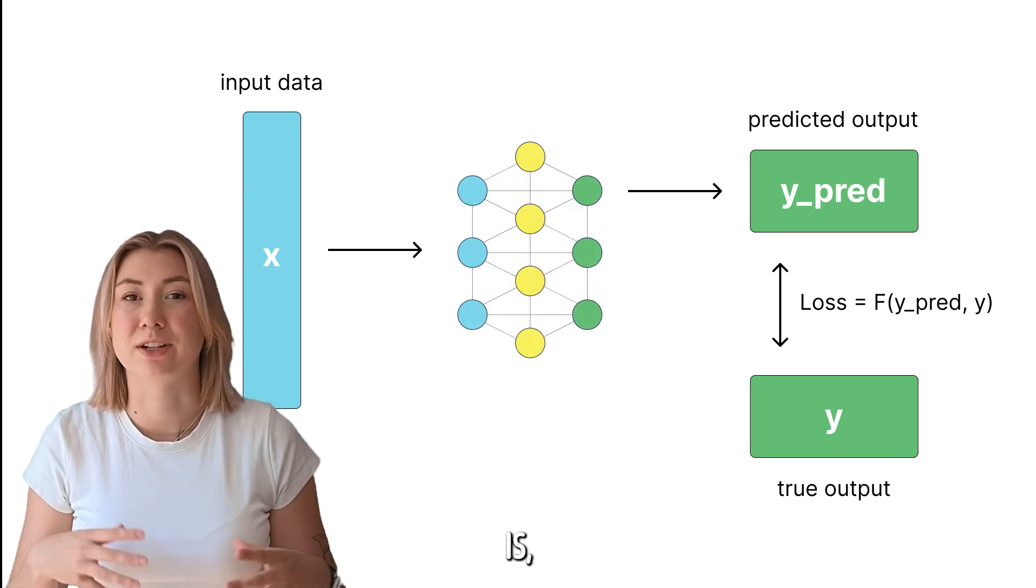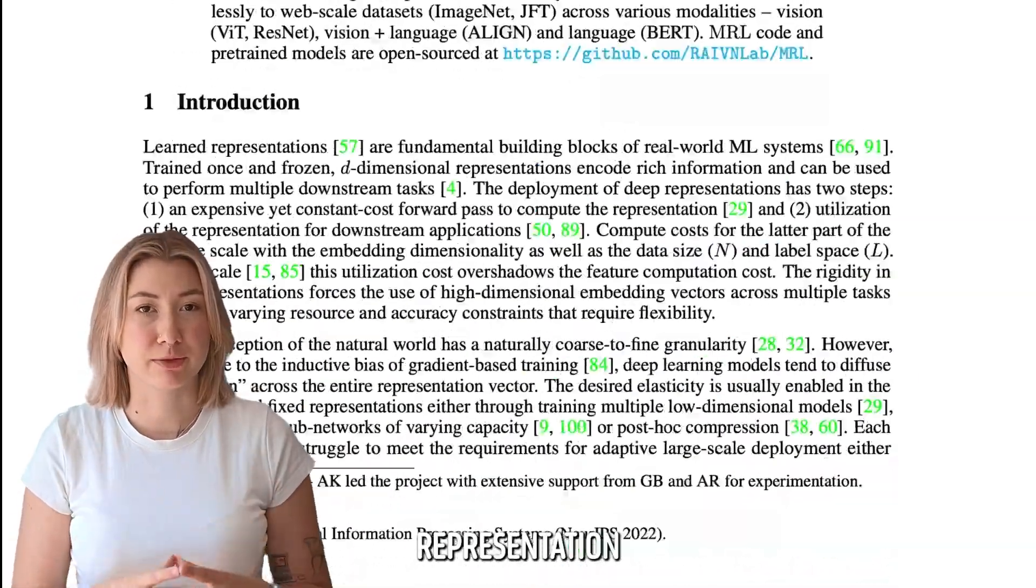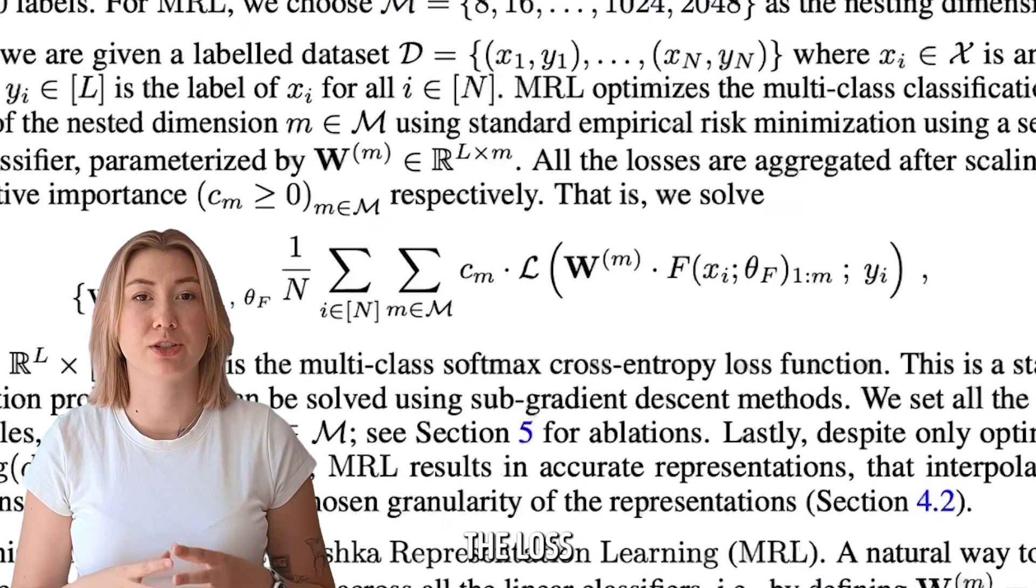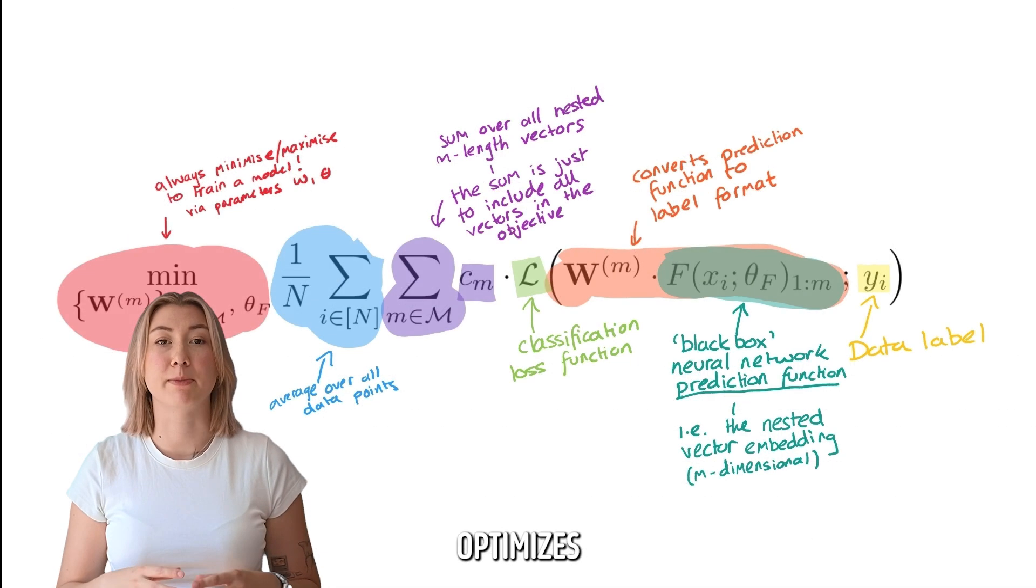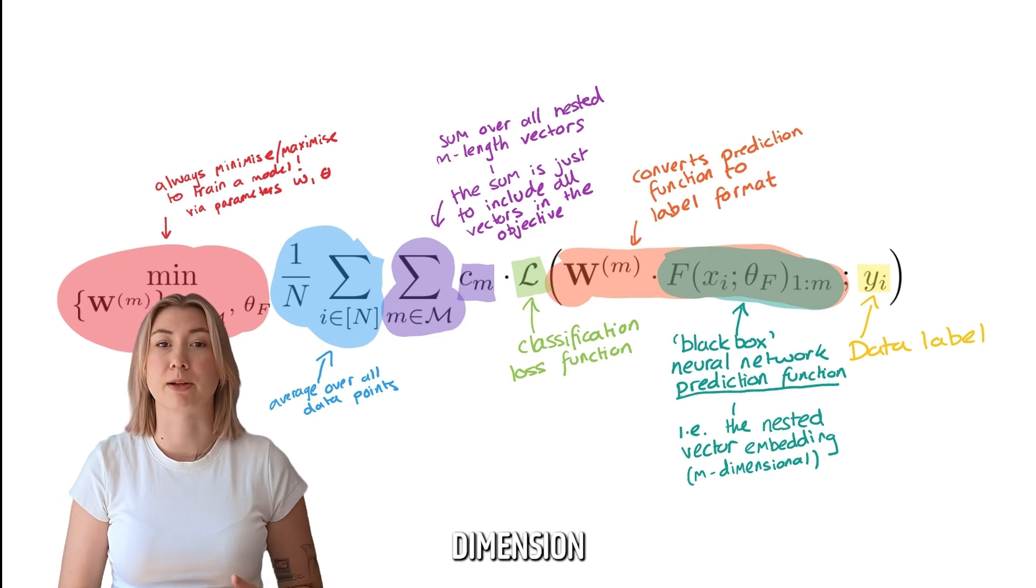The larger this representation is, the more accurate the model becomes, but it also slows down the processing. Matrioshka representation learning makes a key change to the loss function, which in turn optimizes the learned representation of the data in order to make more accurate predictions with smaller dimension sizes.